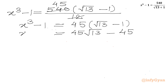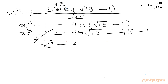So the RHS can be written as 45√13 - 45, which equals x³ - 1. Let us add 1 to both sides: the -1 on the left cancels, and we get x³ = 45√13 - 44.